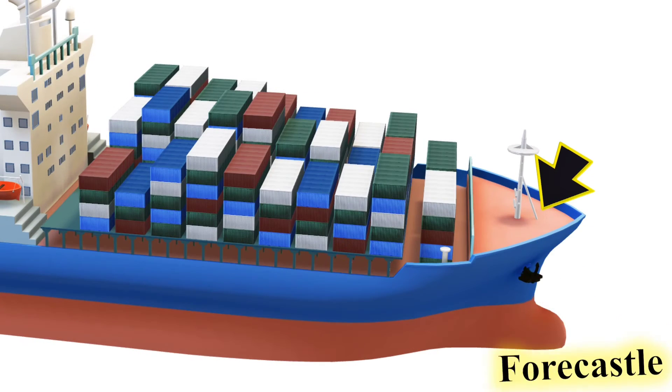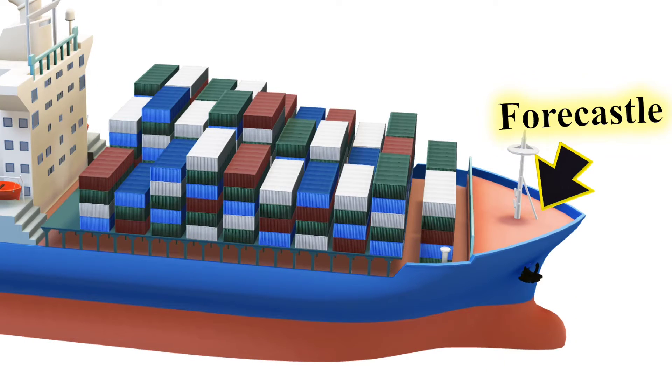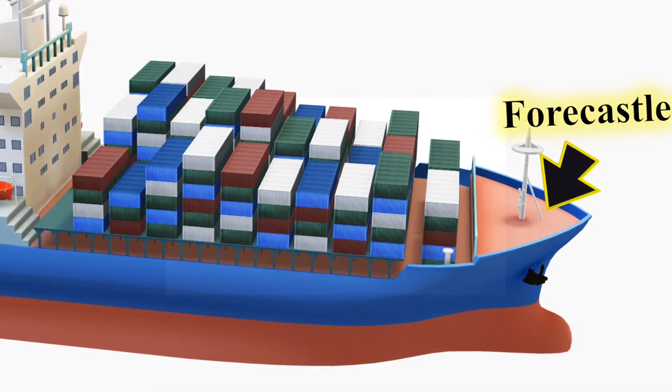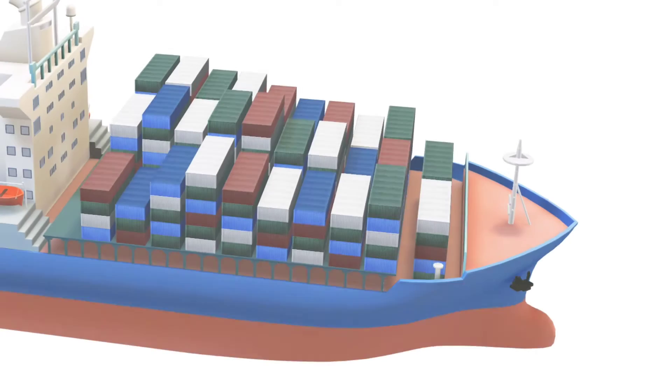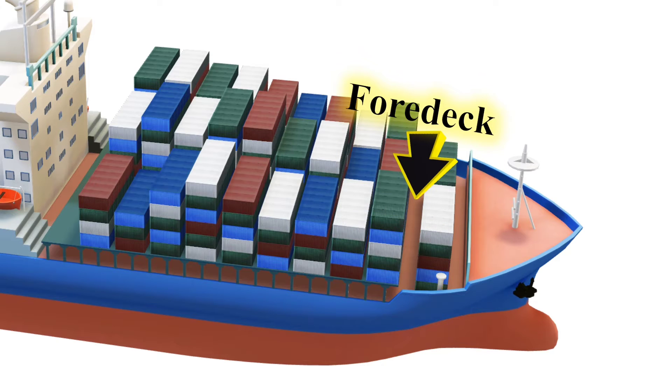Forecastle, the forward part of the ship's upper deck, often used for crew accommodations or storage. Foredeck, the open deck area at the front of the ship.